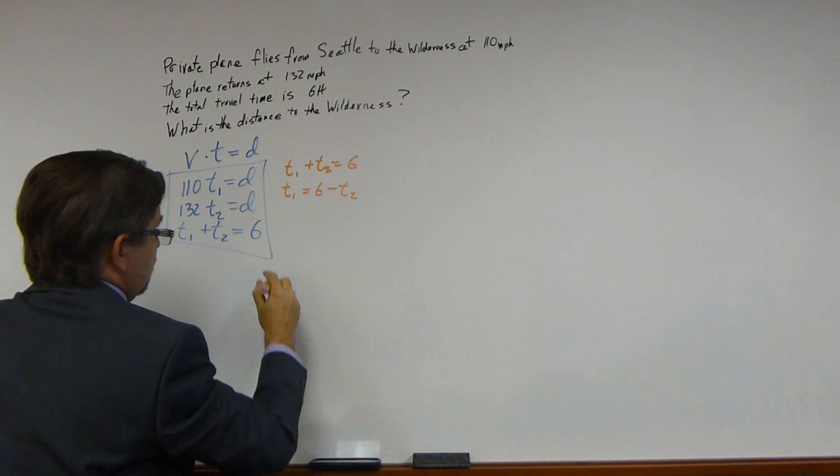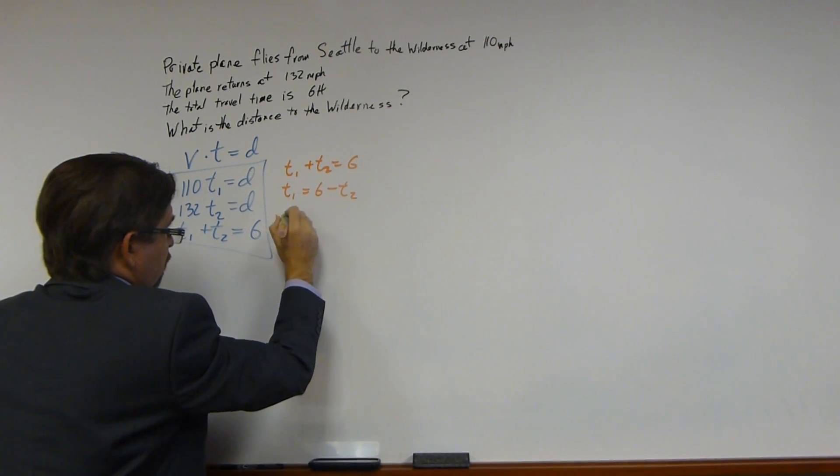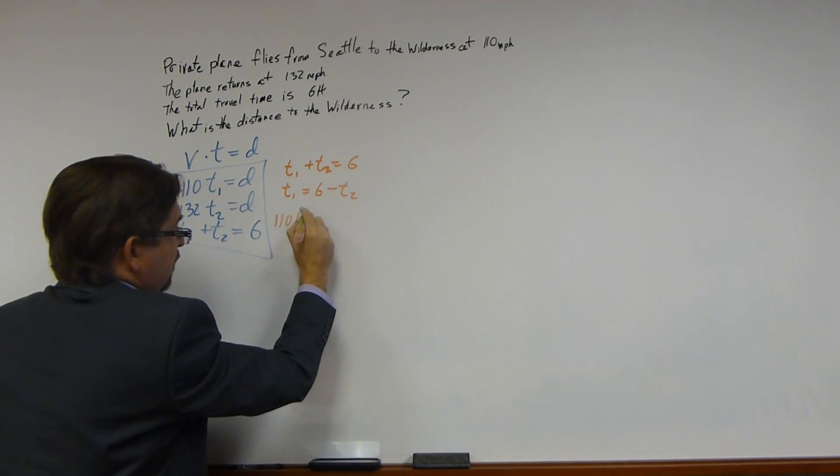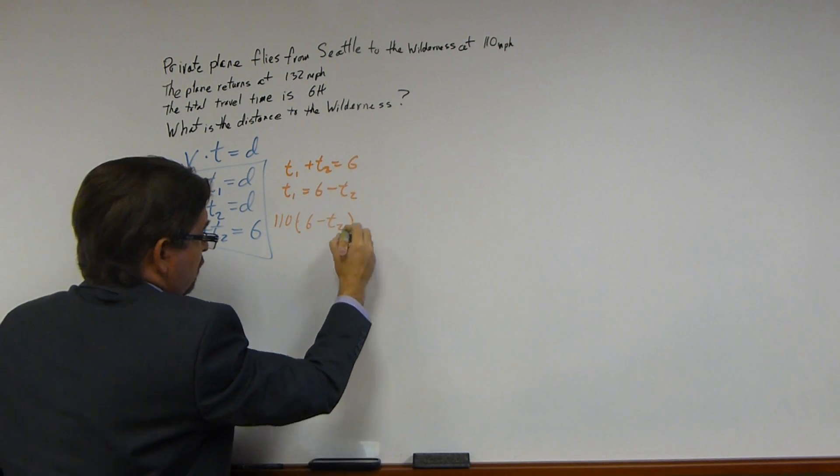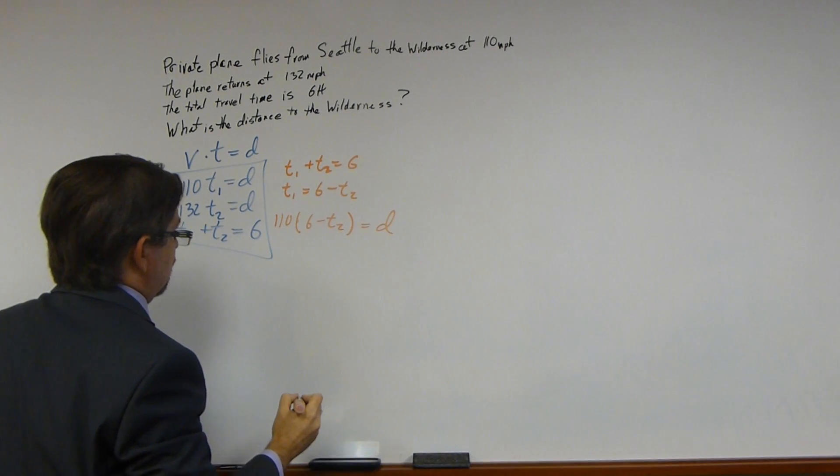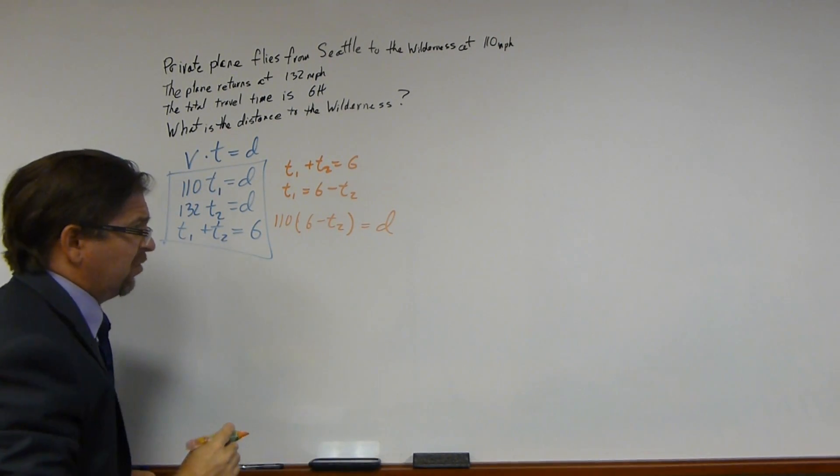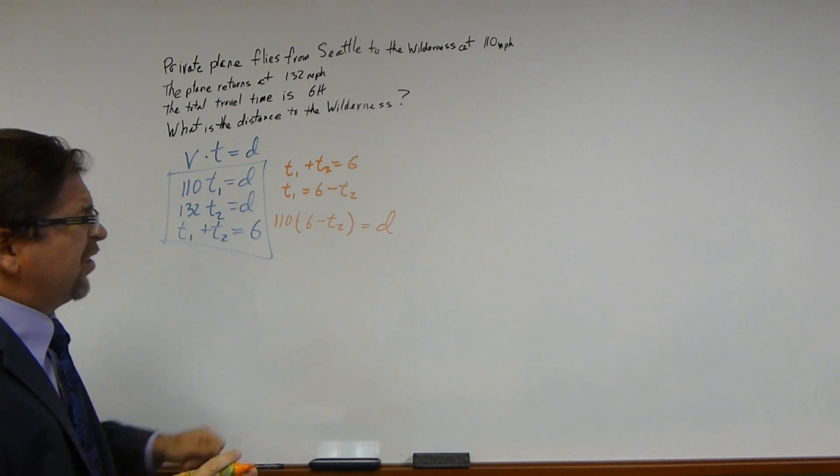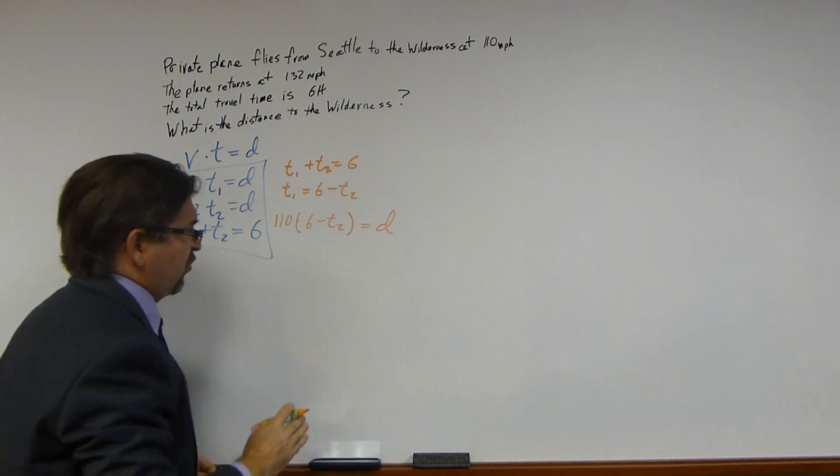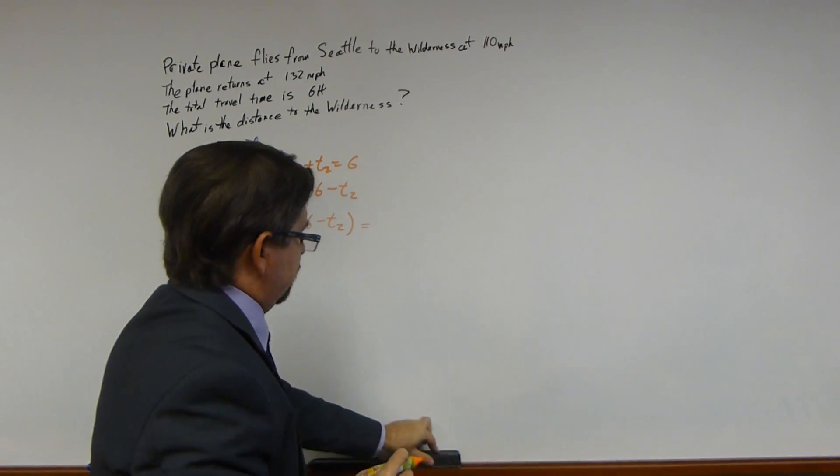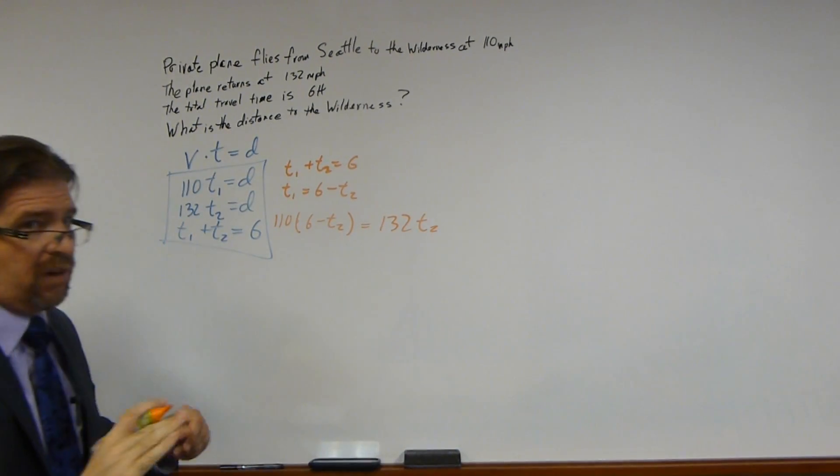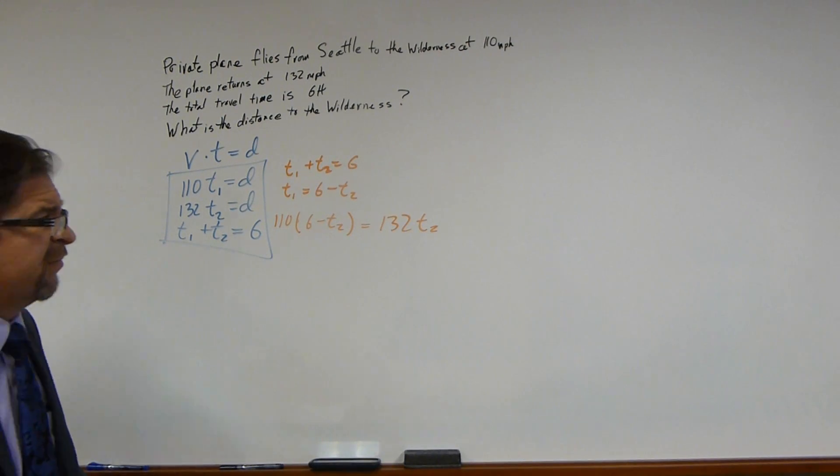Let's put that into here. What do we get? We get 110 times, what's T1? T1 is really six minus T2 equals our distance. I don't want to deal with distance right now. That's an extra variable. One variable at a time. Let's just solve for T2. I know that D is the same thing as this. So I can just replace this with 132 T2. One variable. We can deal with that.